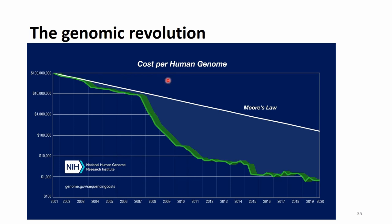In 2007, something happened called next-generation sequencing, which increased genotyping speed and capacity and decreased price at an incredible rate. Between 2001 and 2007 the decrease was from $100 million to $10 million per human genome. The next five or six years — by around 2013-2014 — it cost only $10,000.